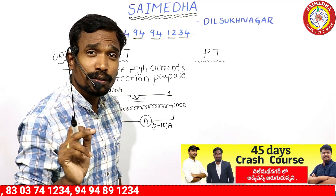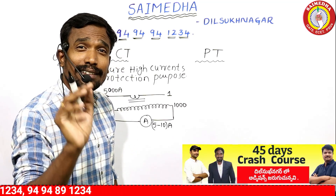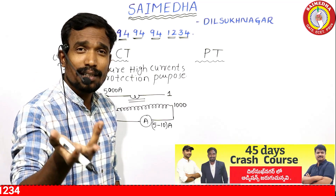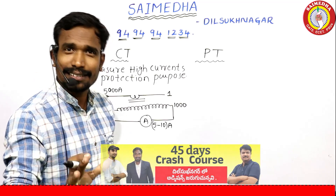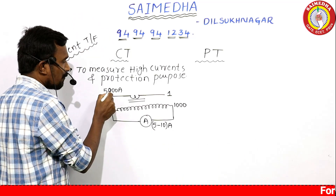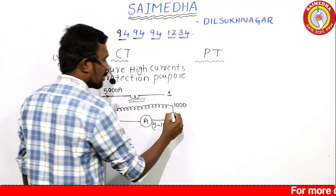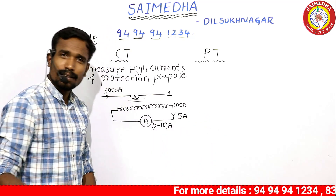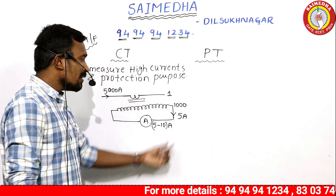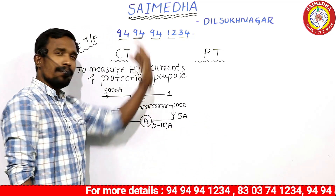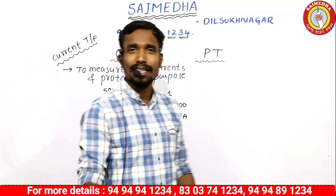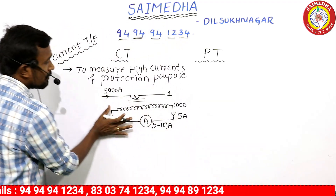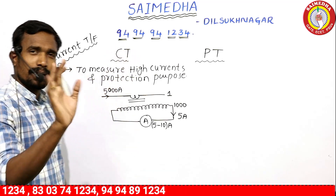The current is stepped down — for example, 1000 times — so 5000 amperes becomes 5 amperes. We measure 5 amperes on the secondary, which represents 5000 amperes on the primary. That is the function of a current transformer.